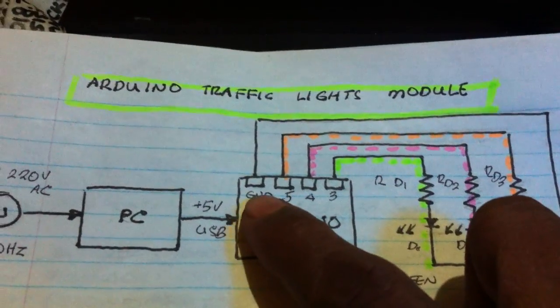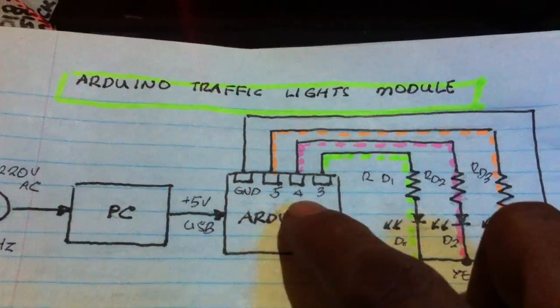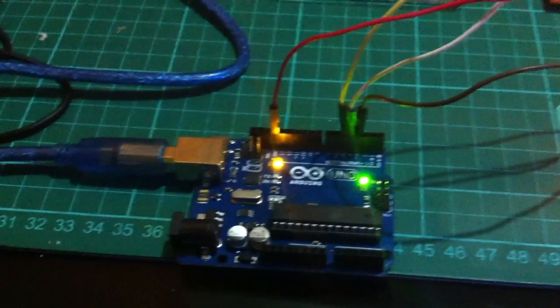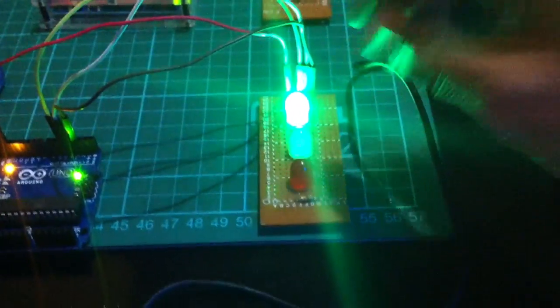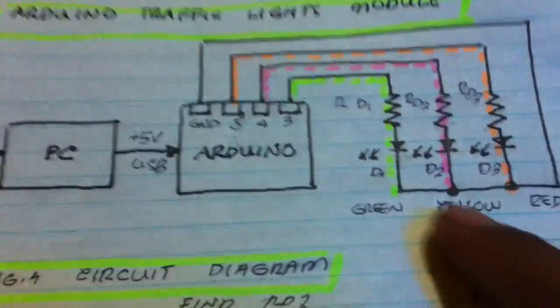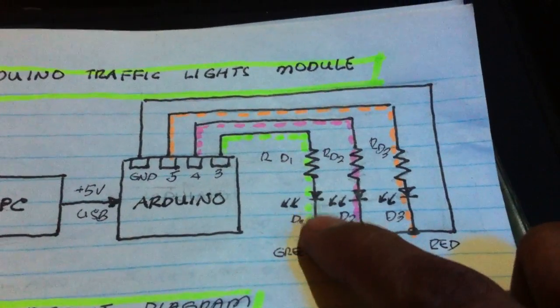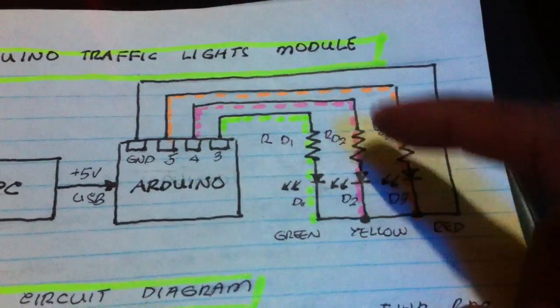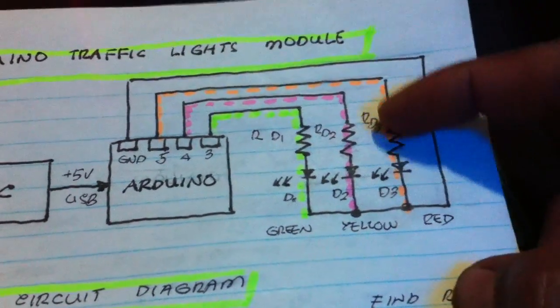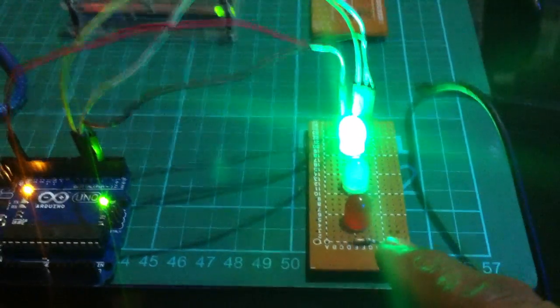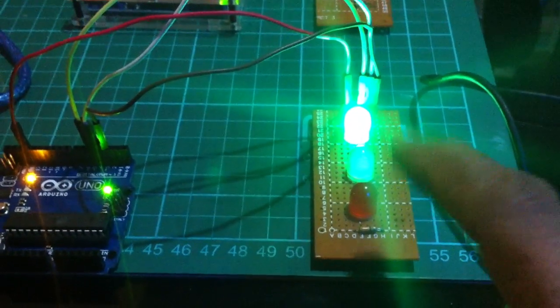On the Arduino we have the ground terminal and pins 3, 4, and 5 — those are the terminals of the Arduino connected to our traffic lights module. This is the traffic lights module: a resistor in series with an LED — green resistor, LED yellow, resistor, LED red.